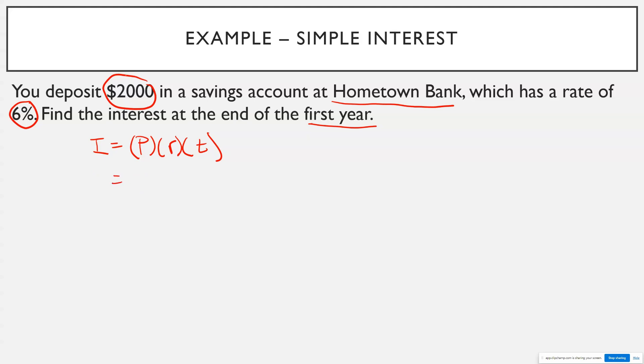So the first thing you have to look at is, well, how much did you deposit? That's our principal. So I'm going to take $2,000. What is my interest rate? Well, they're giving me 6%, so you just have to convert that to a decimal, so it's 0.06. And then T is the time. Well, how many years? I just want to find it at the end of the first year, so times one.